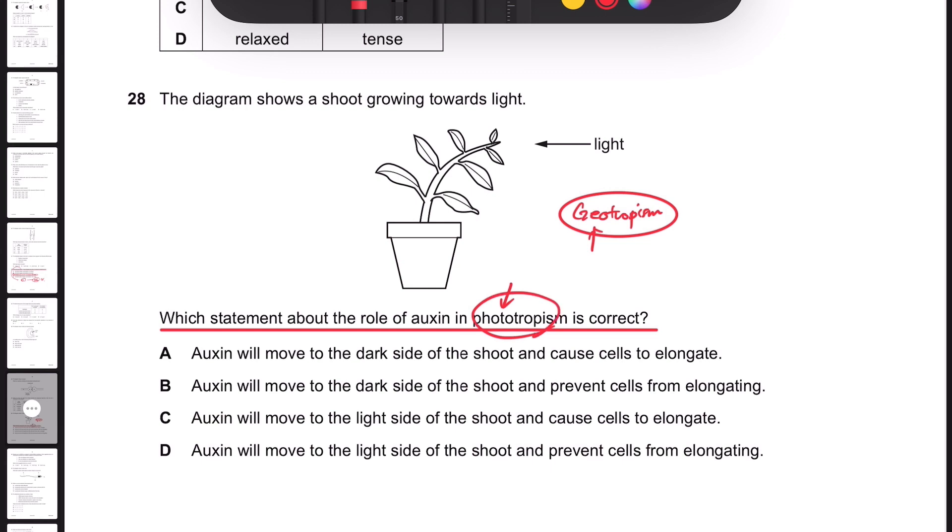It's asking about the phototropism, so we'll just focus on phototropism. The shoot is bent towards light in the diagram.